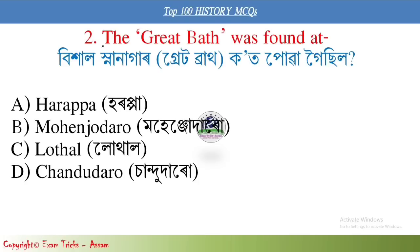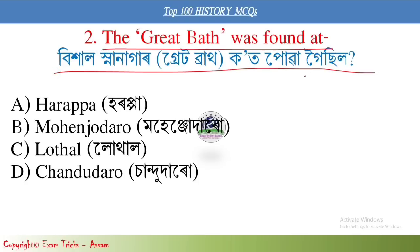Next question: The Great Bath was found at which site? It is located in Pakistan, opposite Mohenjo-daro. The correct answer is option B, Mohenjo-daro.